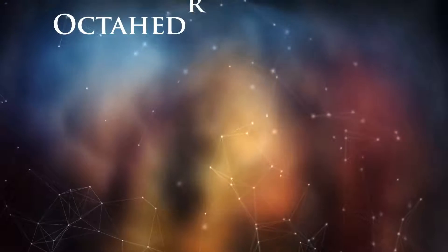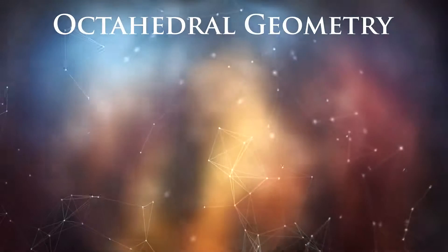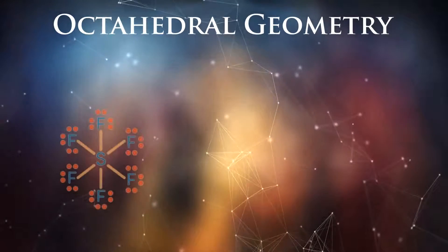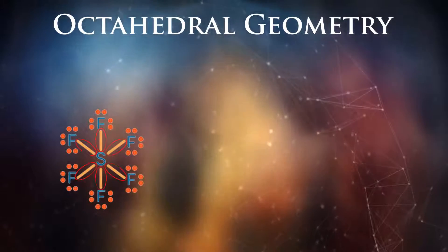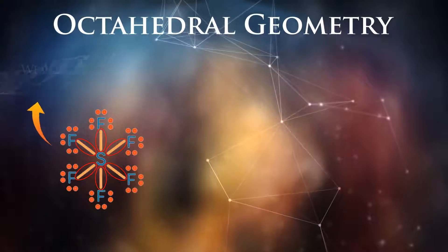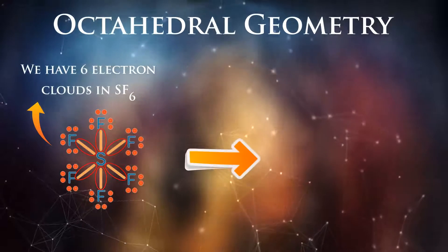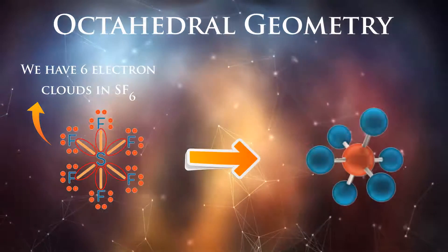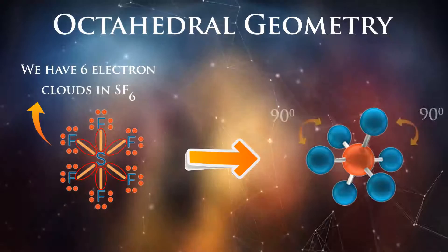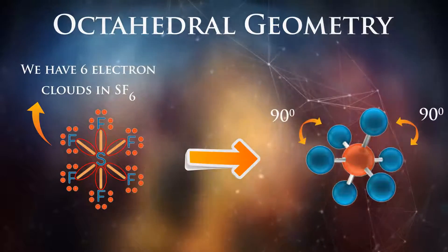The last example of the common 3D structure is octahedral geometry. A molecule will become an octahedral if its central atom has six electron clouds around it. As these electron clouds get as far away from each other as possible, they will create 90 degrees angle between each one of them.